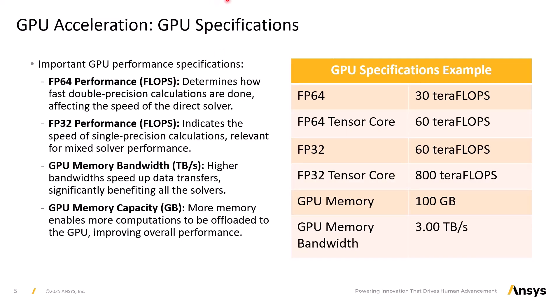Next we have FP32 performance, also measured in FLOPs. This indicates the speed of single precision calculations and is more relevant for mixed solver performance. Then we have bandwidth, measured in gigabytes per second or terabytes per second. Higher bandwidth speeds up data transfers and significantly benefits all solvers, in particular the iterative solver.